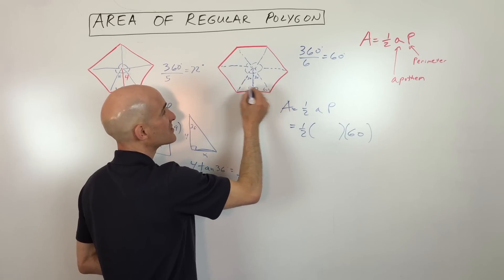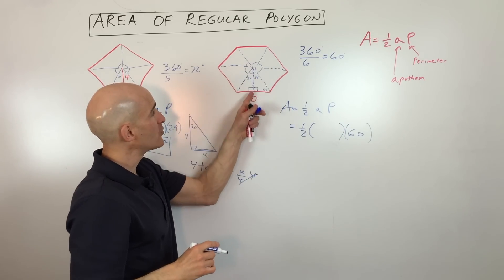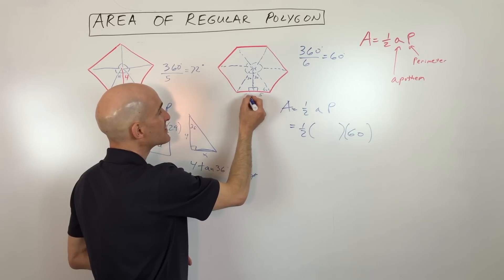And so that means this is a 30, 60, 90 triangle. Also, when you drop the apothem, it's going to bisect the side. So each of these is going to be 5.